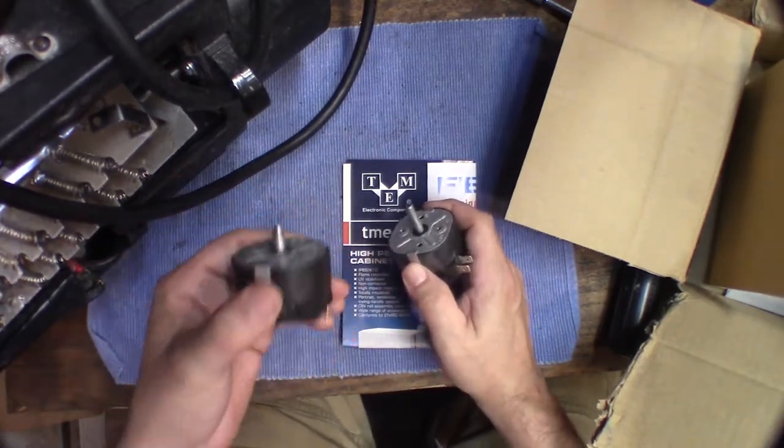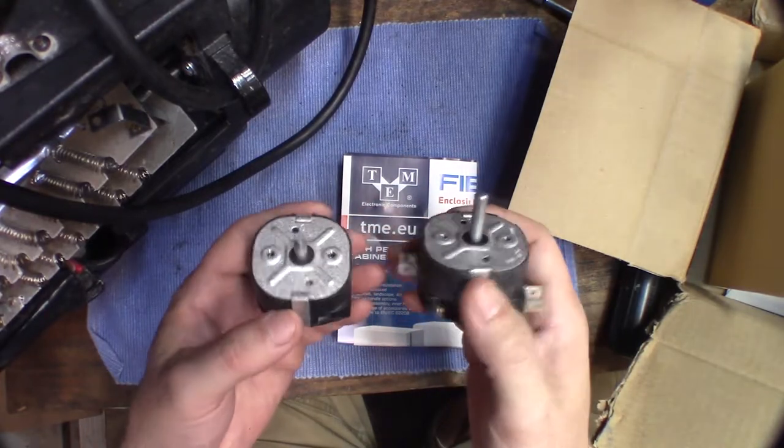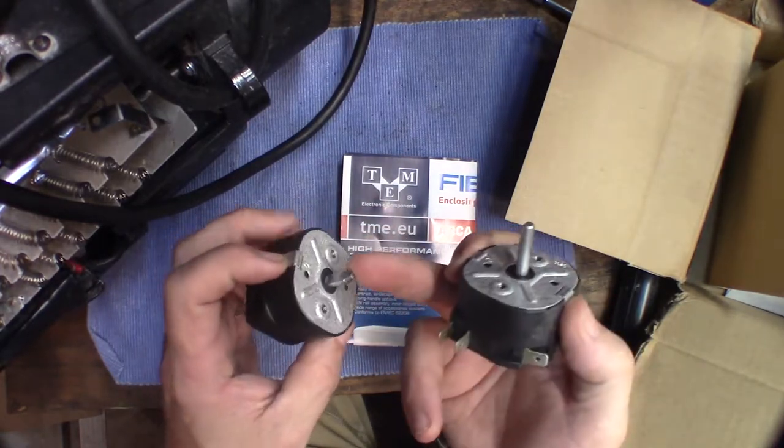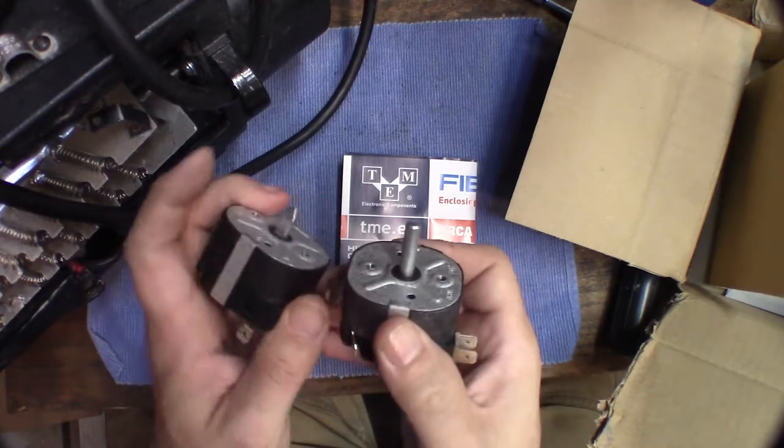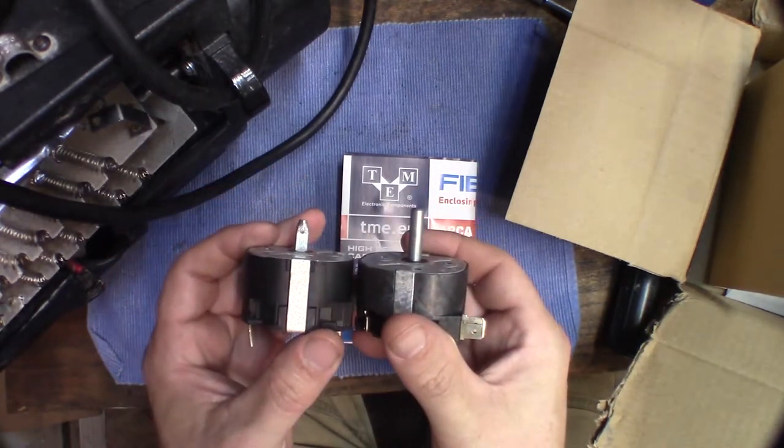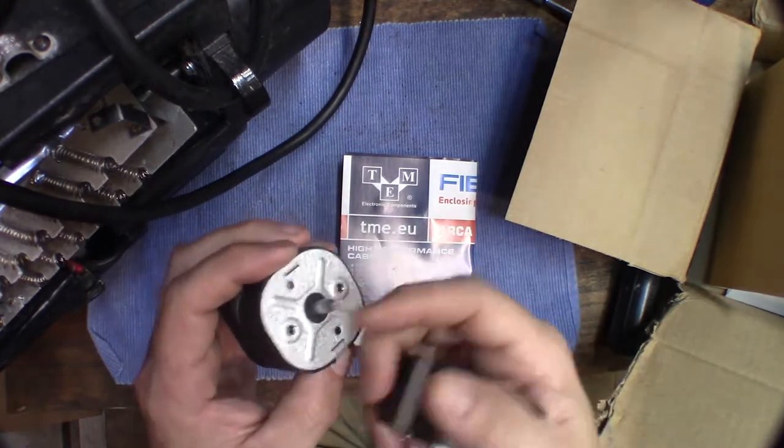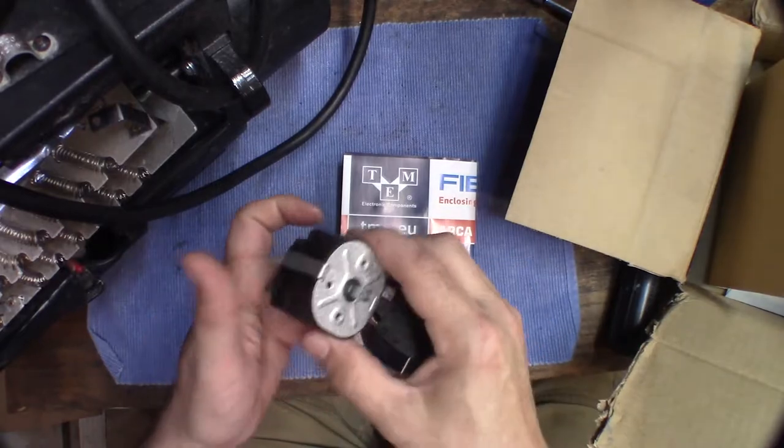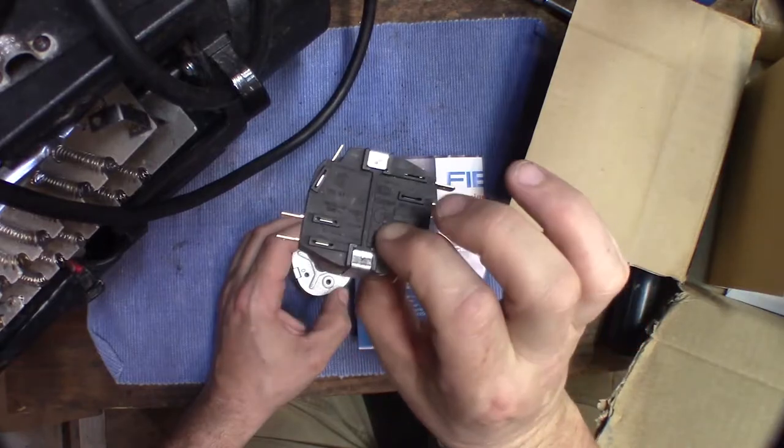Now of course if this were mine, I would have put a toggle switch on there just to turn it off and on or maybe even tried to weld this shaft up. You can see the difference in the shafts, how much that's ground down. Maybe try to weld this up and make it work but it's not mine, it's for customers. So we're going to do it the right way. We're going to replace it with a new unit.